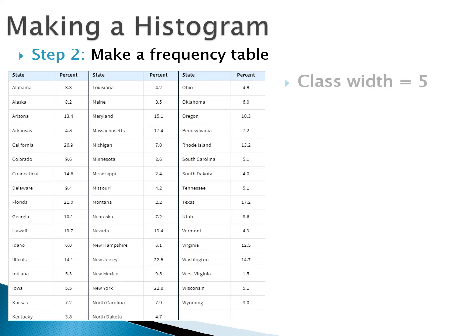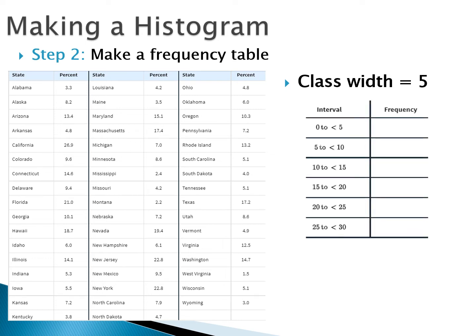Now we make our frequency table starting with our classes. The class width is five — a class is just the width of one bar. We add the class width vertically, starting at zero since it's easiest, though we'd want to start at anything that includes our minimum value of 1.5. Starting at zero is just simpler. Each time we move to the next class, we add five. The first bar goes from 0 up to, but not including, 5 — everything from 0 to 4.9999. Now we have all our classes and go through counting how many values fall in each.